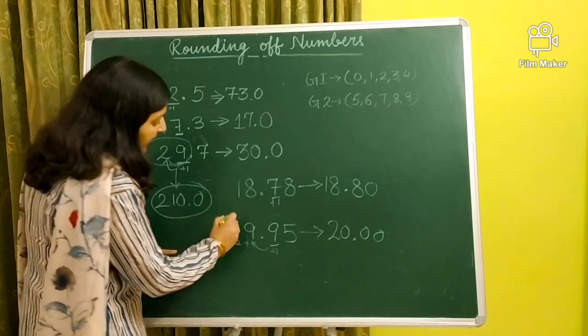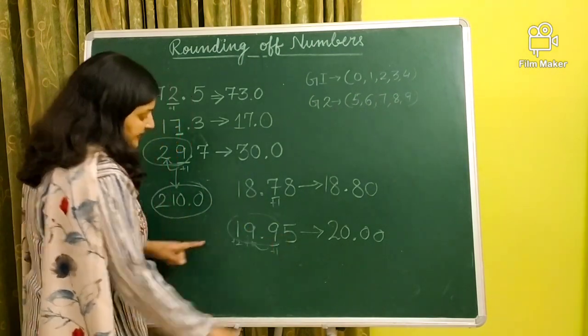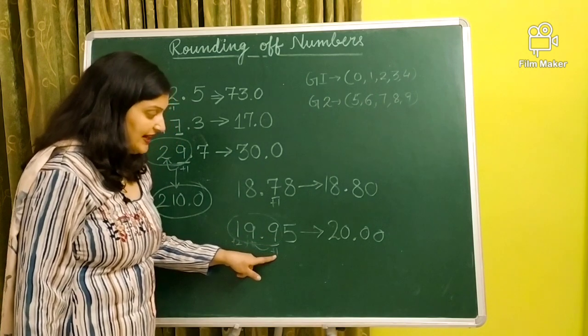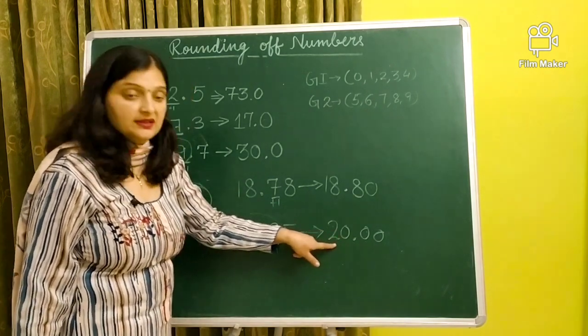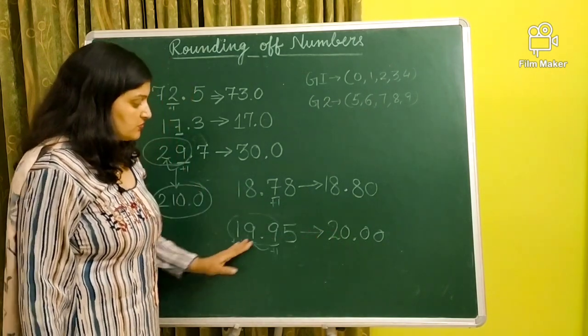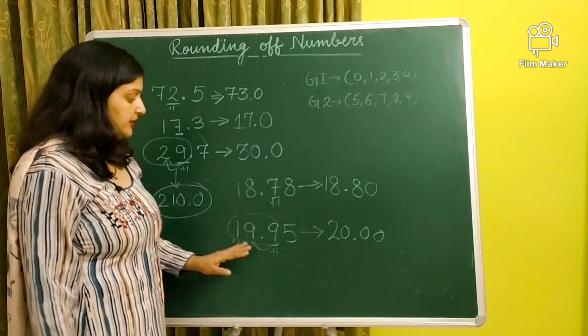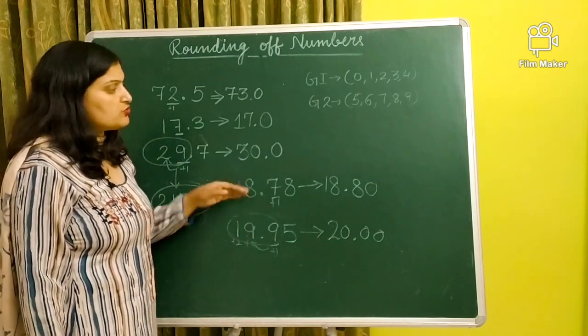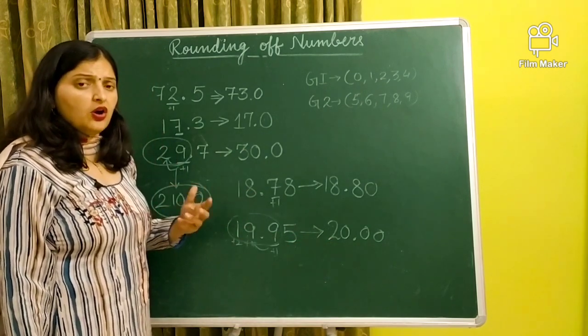Or you can say that, if you look without decimal, then if you add one to 199, what will come? Without decimal, 200. Okay. So this is the way to round off the numbers to nearest tenth or hundred place.